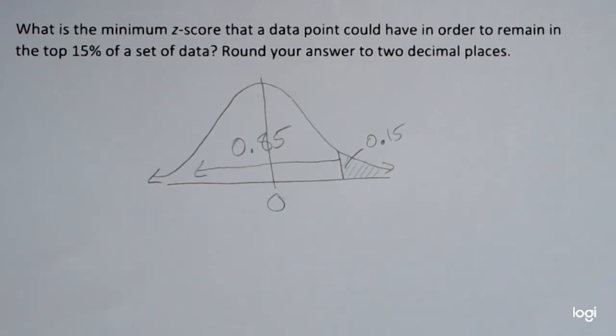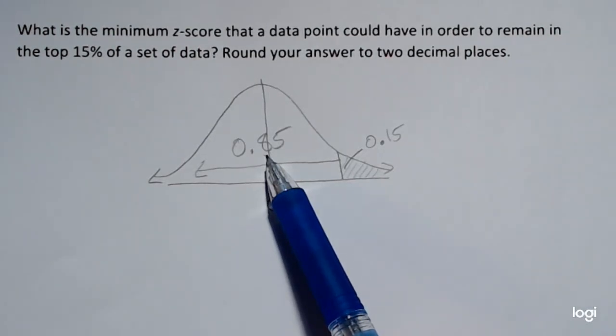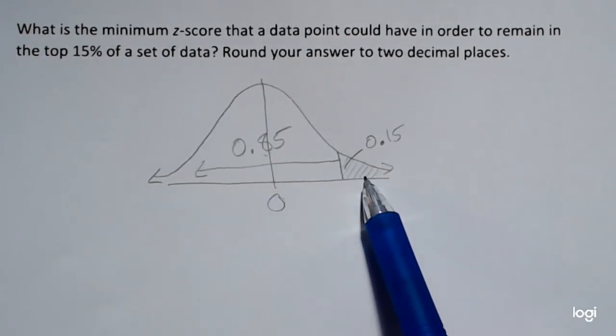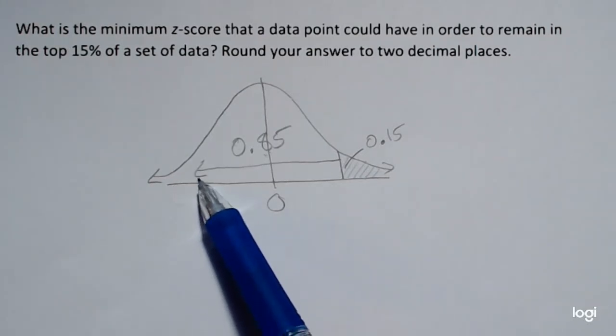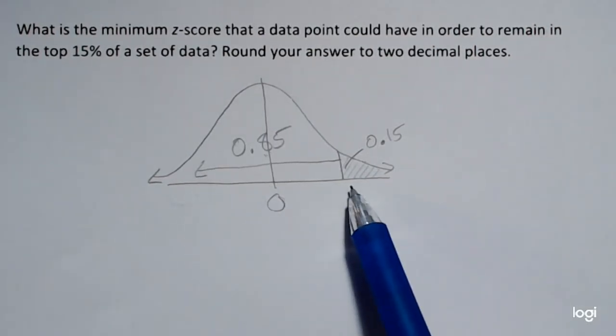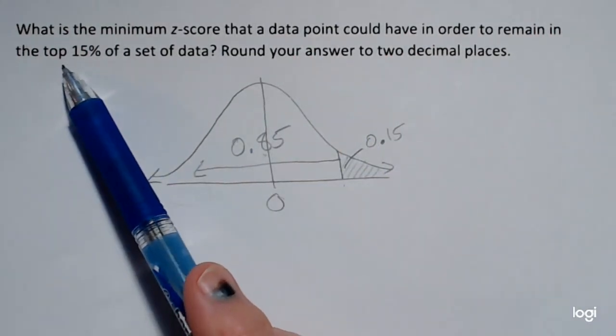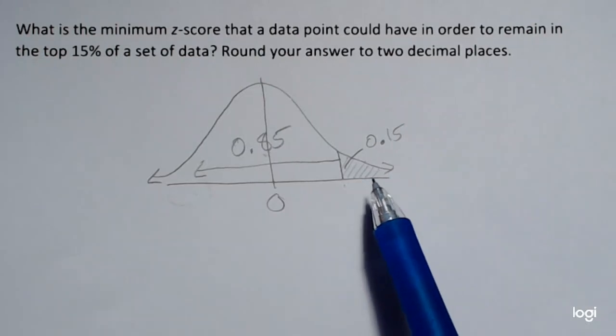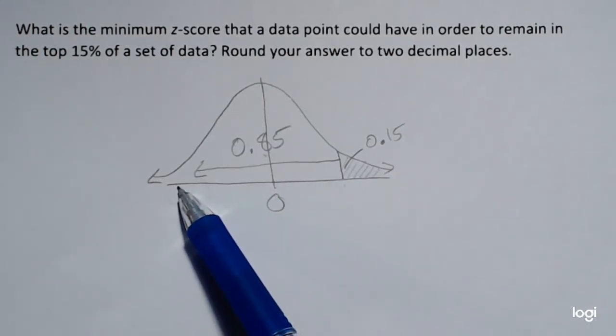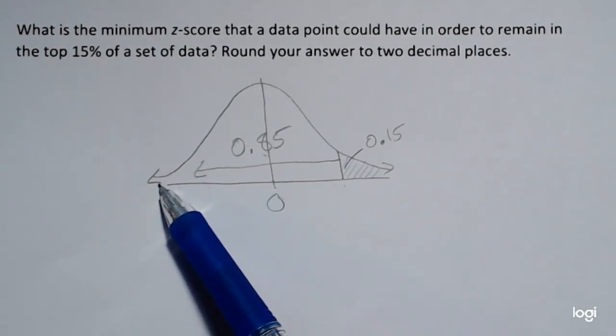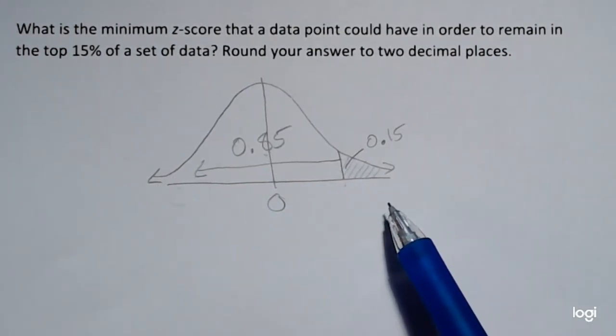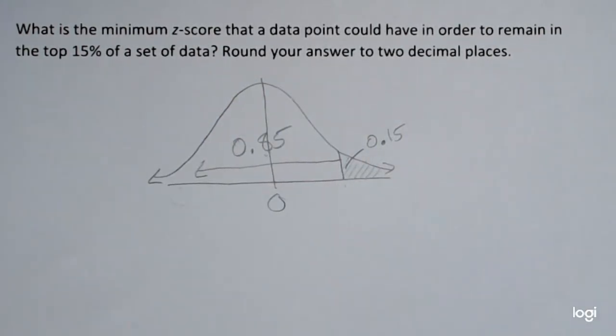To use both the table and the calculator, I need this 0.85. I could use this 0.15 in the calculator, but it's going to spit out the negative version of this. And I want this upper one because I'm told that I'm looking for the z-score that separates the top 15% from the lower 85%, not the z-score that separates the lower 15% from the upper 85%. So how the problem is stated is the same type of problem as asking for the 85th percentile. We want 85% of the area below this particular z-score.